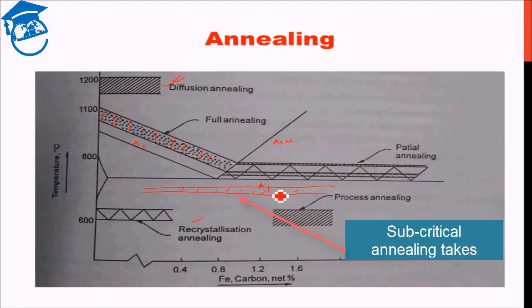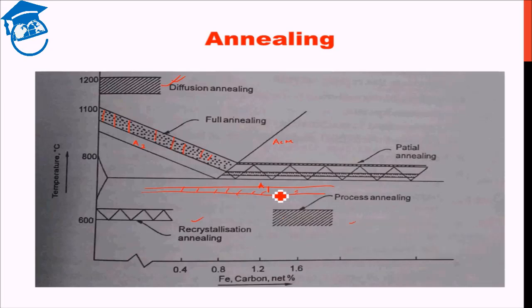So in this lecture I introduced you to the concept of annealing, the advantages of annealing, and some different categorizations of annealing. This diagram helps you visualize where exactly each kind of annealing takes place in which temperature range. From the next lecture onwards we will discuss each of the annealing processes in detail. Till next class, have a great day. Goodbye.